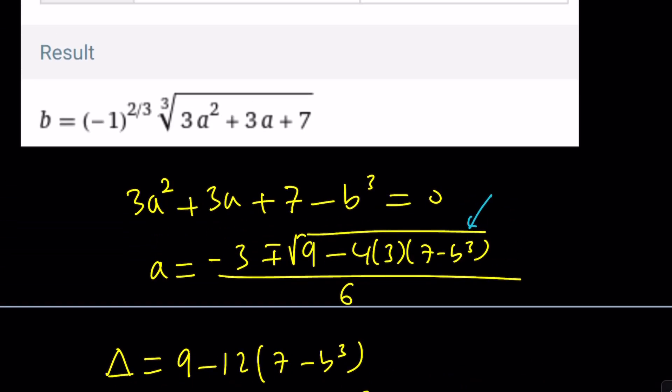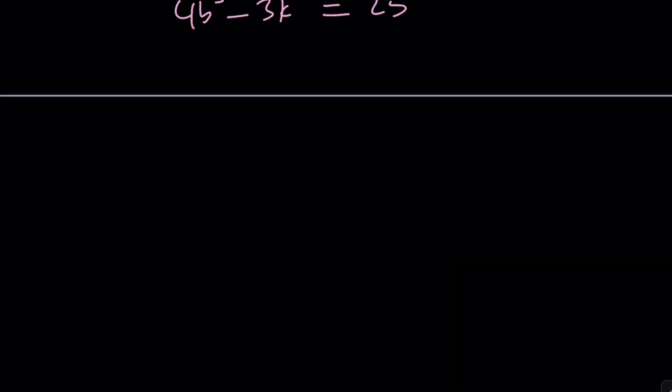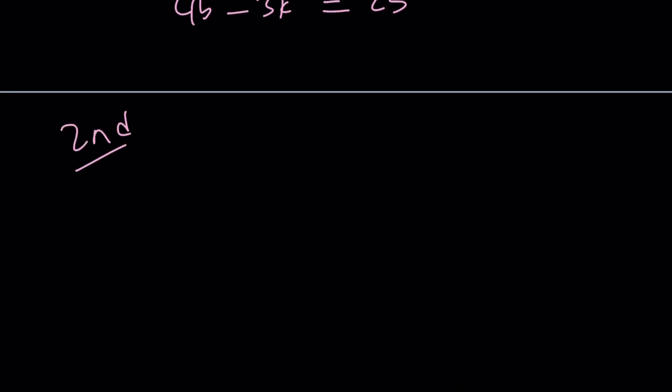Now, let's go ahead and see how we can tackle this problem a little differently. So we can consider this our first attempt—it's not a complete solution. And this will be our second attempt. Okay, so here's the problem. Again, 3a² + 3a + 7 = b³, and we're looking for integer solutions.